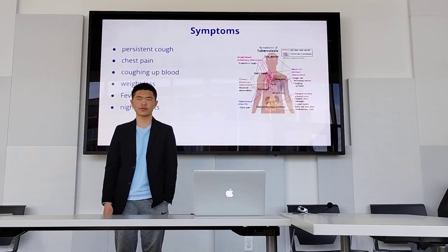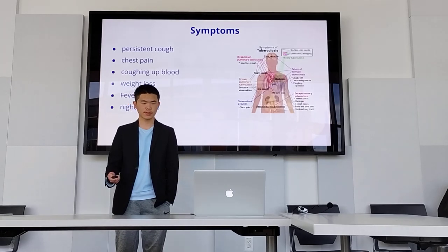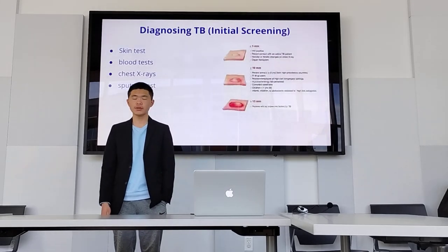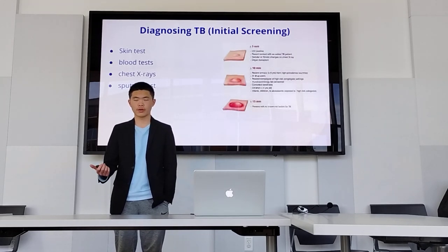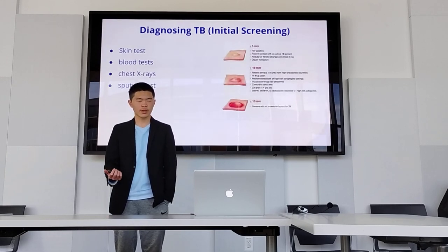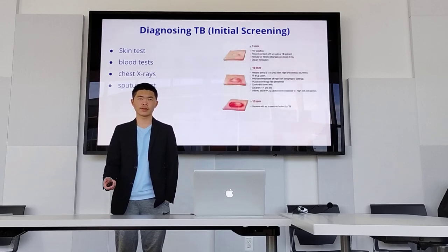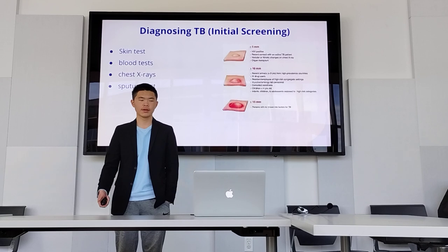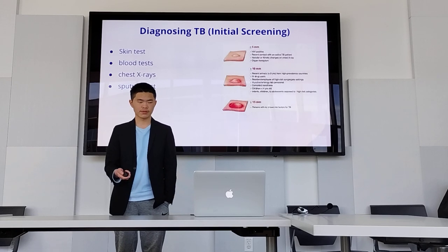Symptoms include persistent cough, chest pain, coughing up blood, weight loss, fever, and night sweats. To diagnose TB, we have a skin test, which involves a healthcare worker injecting tuberculin into your skin. This causes a reaction or a bump, and depending on the size or how long it takes to go away, we can determine if the person has TB. There are also blood tests, chest x-rays, and sputum tests to look for signs of TB.